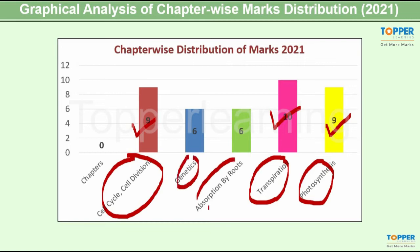The least weighted chapters were chapters on genetics and absorption by roots each carrying 6 marks in the 40 marks question paper. So overall it seemed to be a balanced question paper with the highest weightage for the questions on the chapter transpiration. Overall the questions were straightforward and students having concept understanding would have been able to score a good percentage in this question paper.